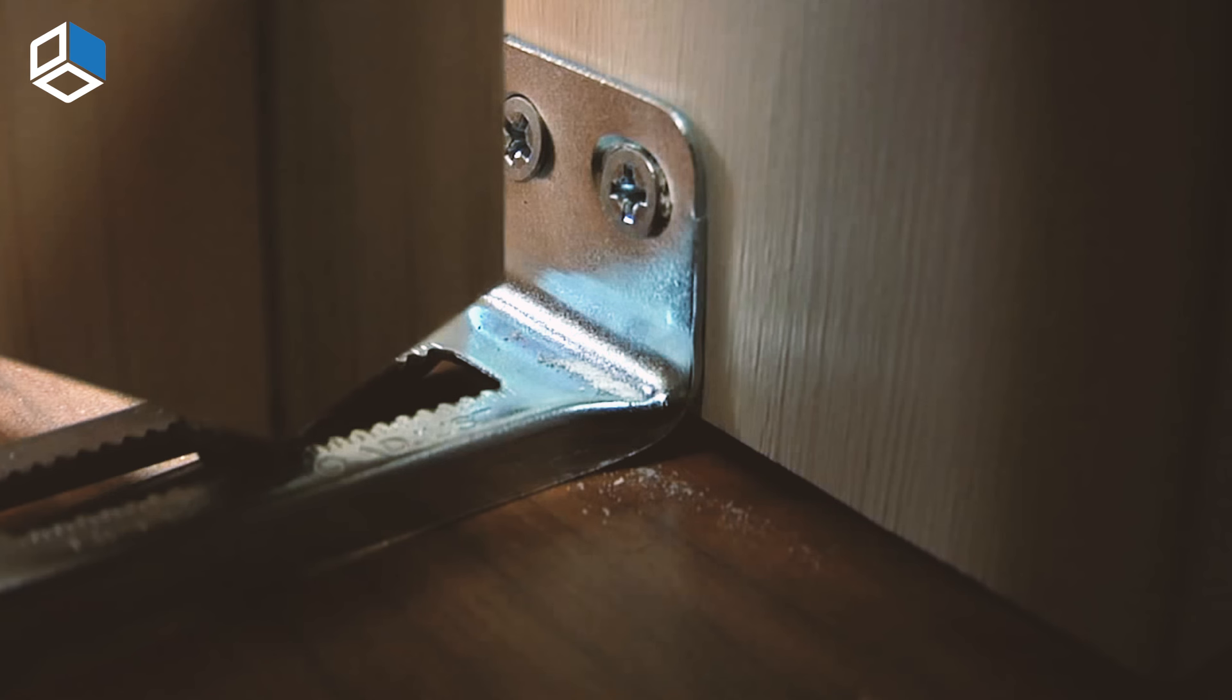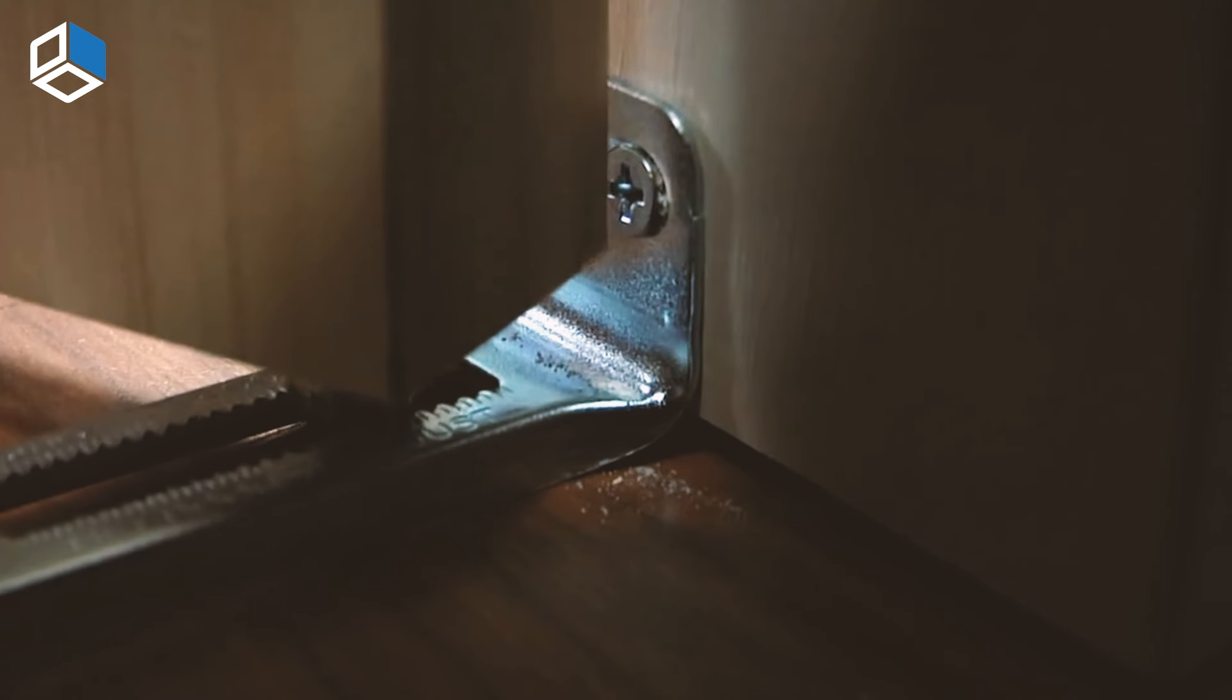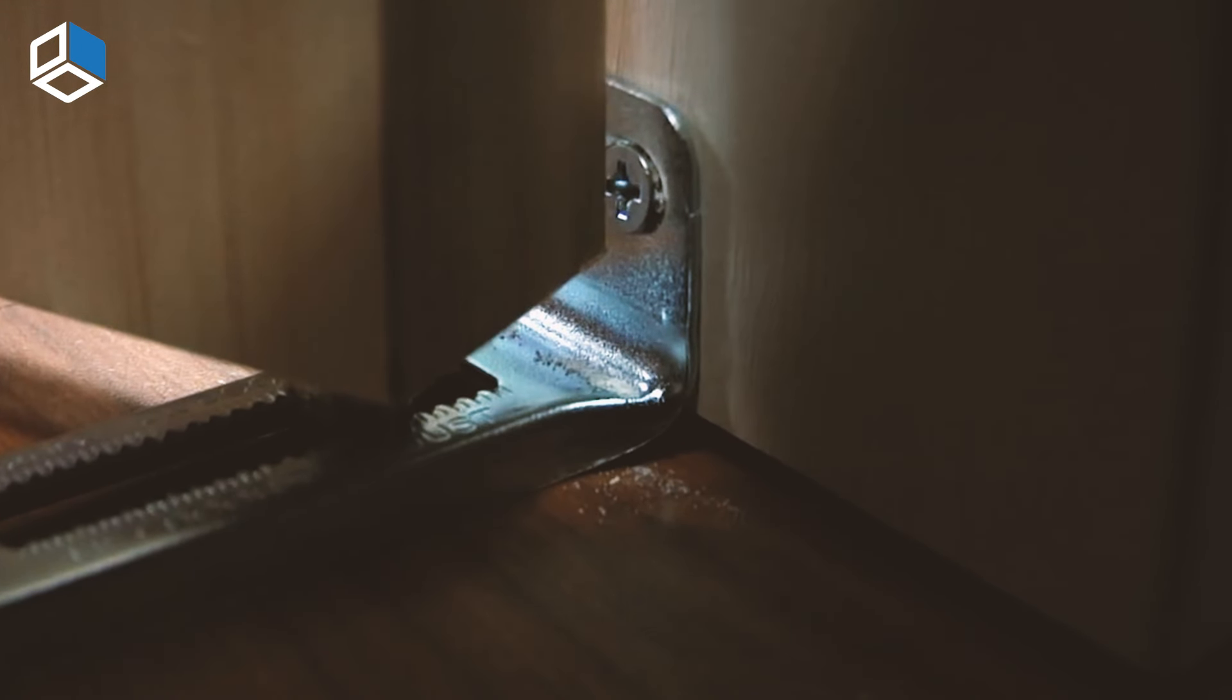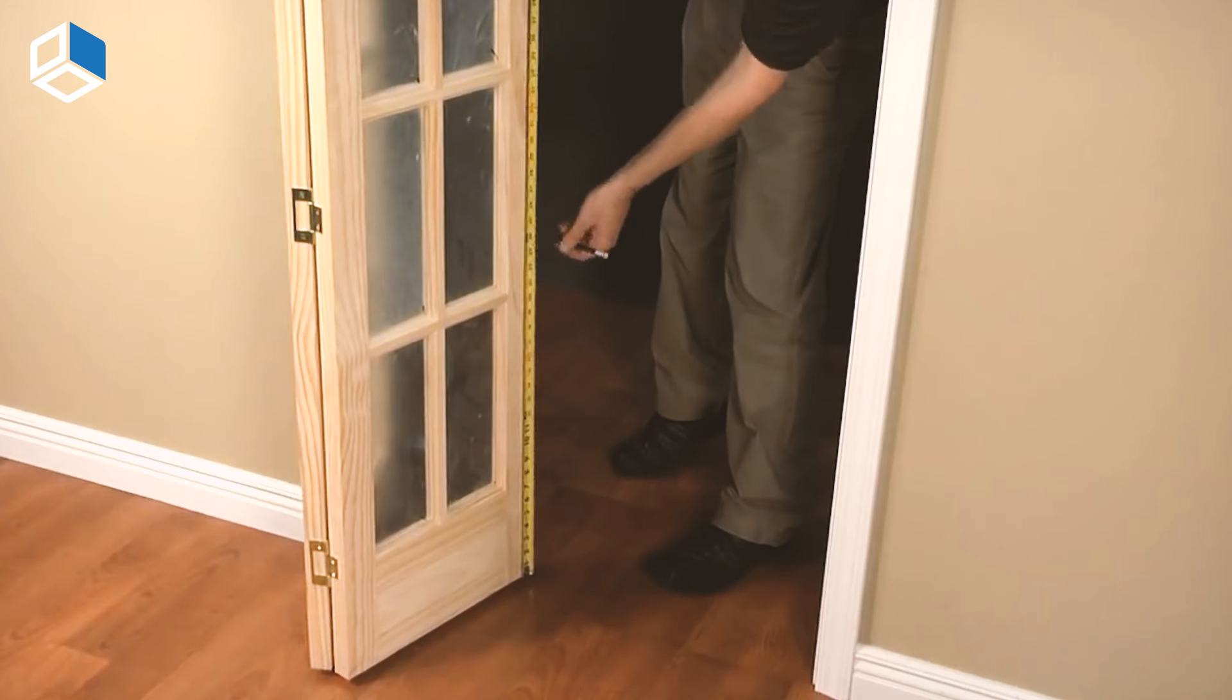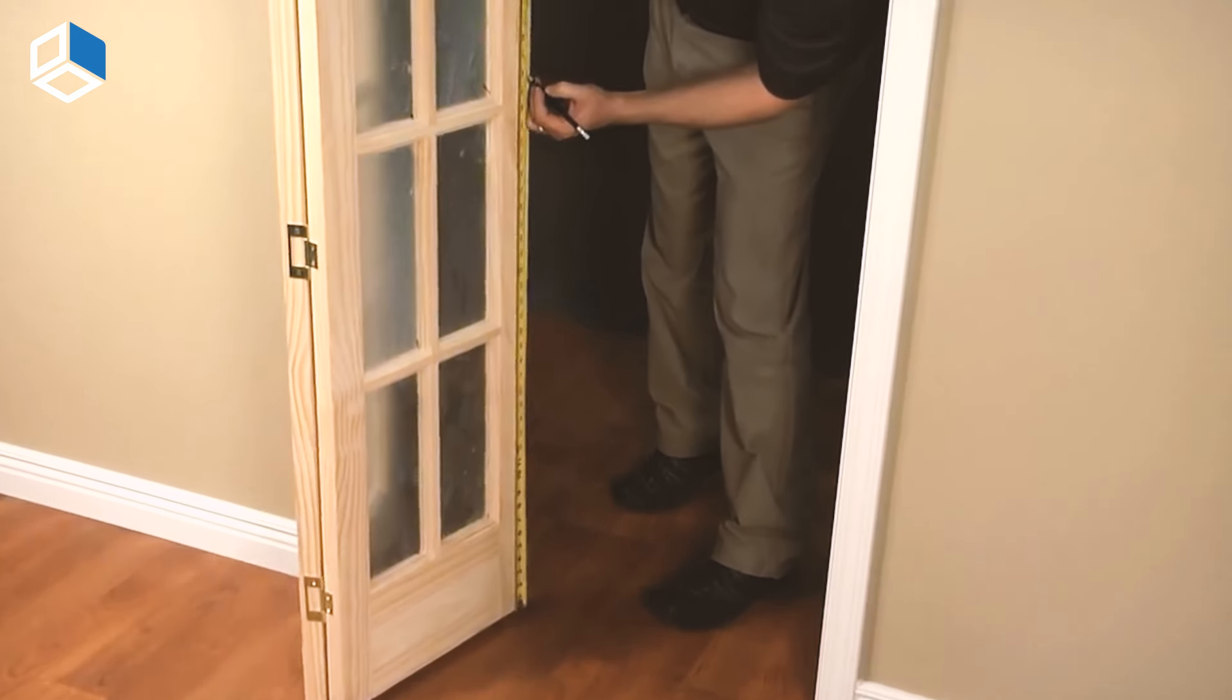You may also need to adjust the track brackets by loosening the bracket screw and sliding the bracket within the track. Be sure to tighten it at your desired location. You can also adjust the door closer to or farther away from the jamb as necessary by moving the bottom pivot in either direction.